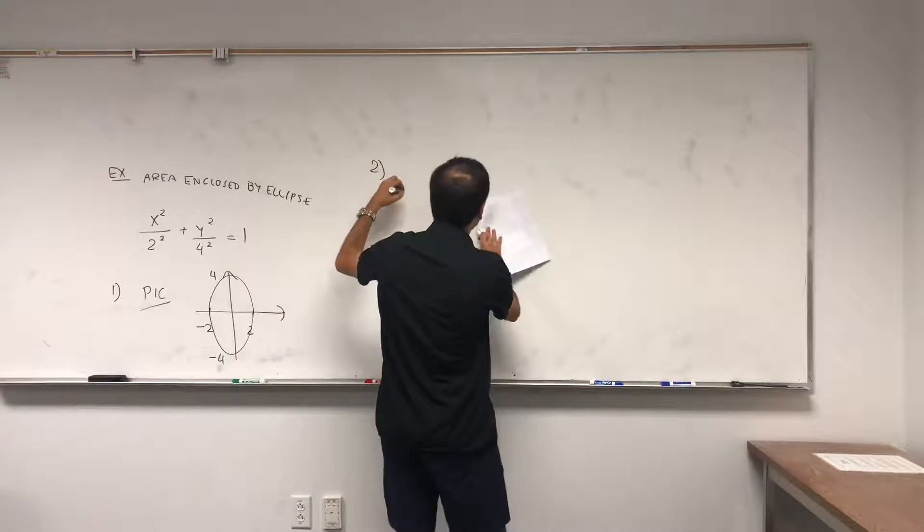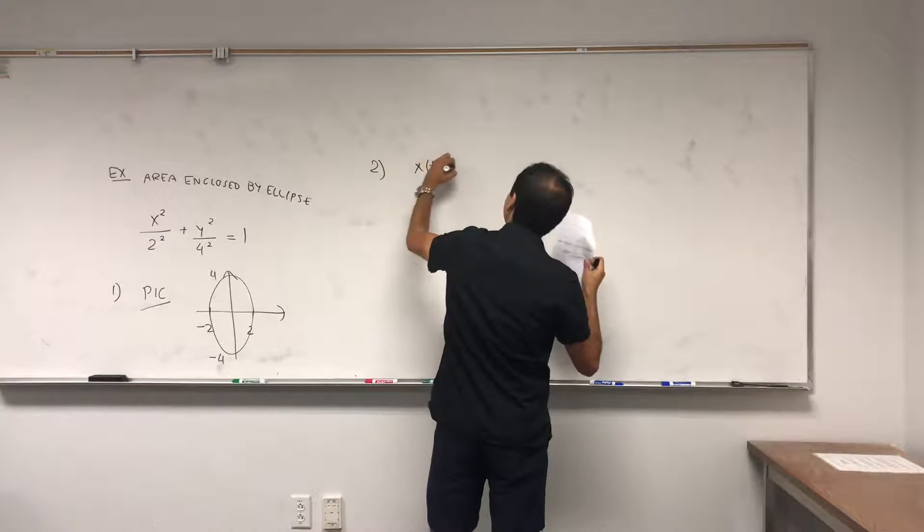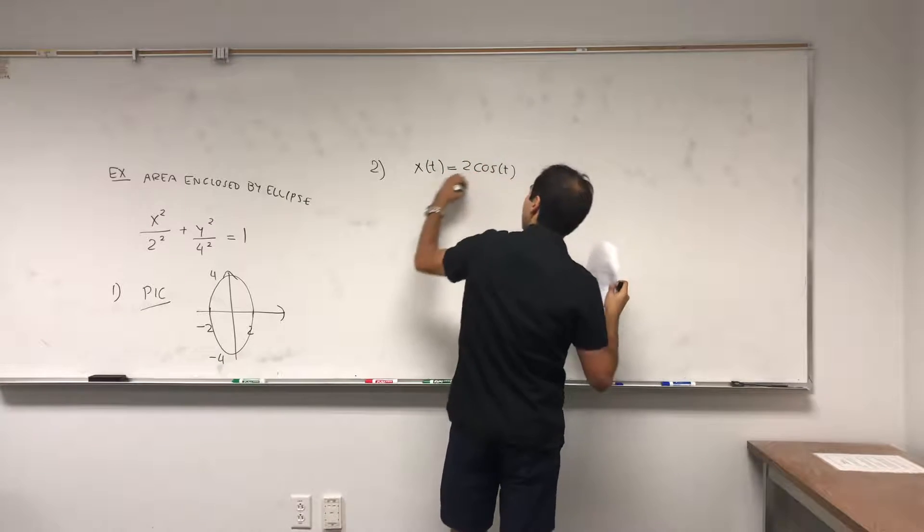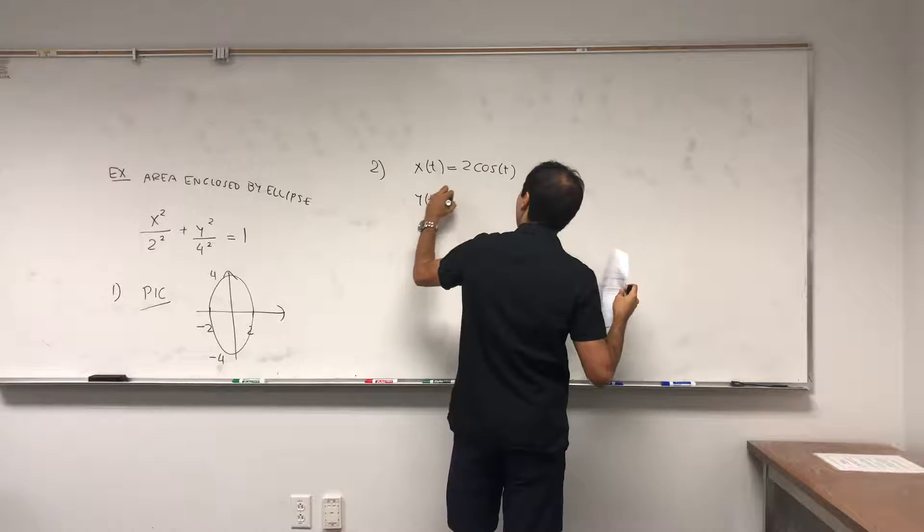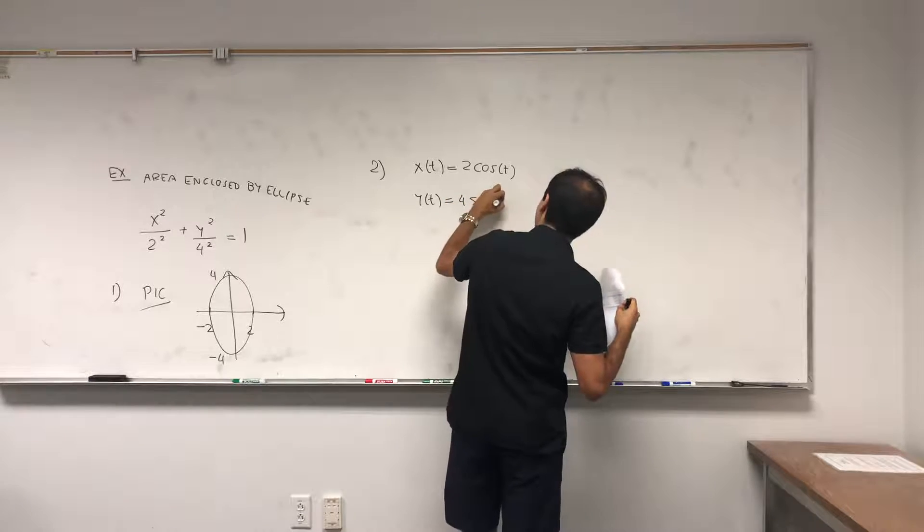Second thing, parametrize. So x of t is two cosine t, y of t is four sine of t.